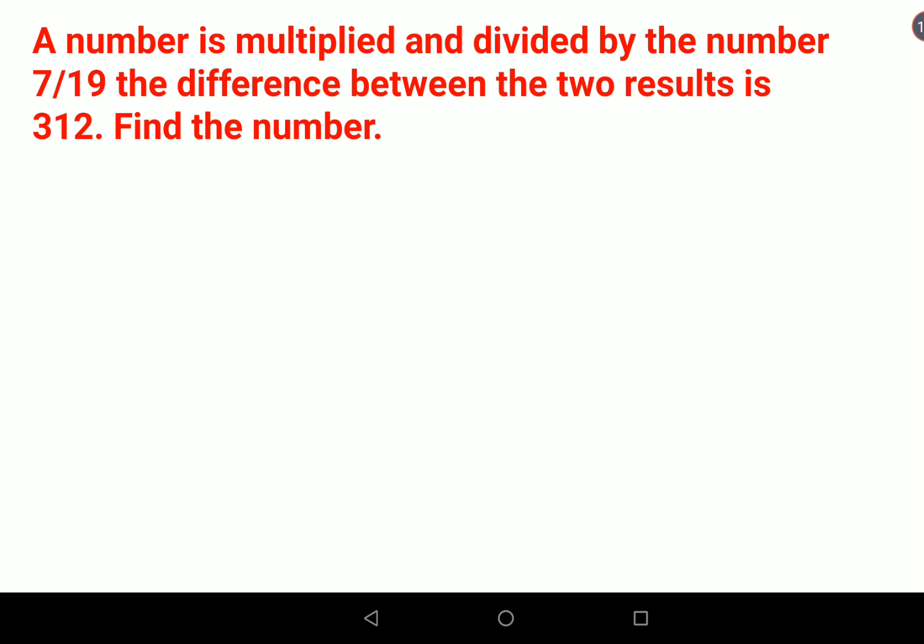We will take the number as x. When it's getting multiplied, we have x times 7/19. When it's getting divided, we have x divided by 7/19.